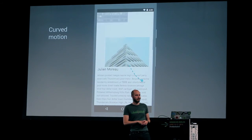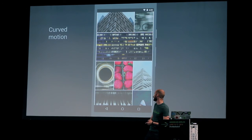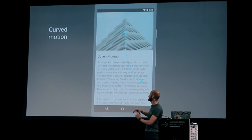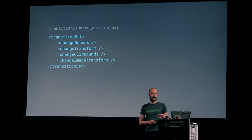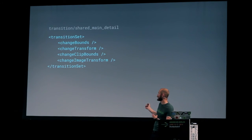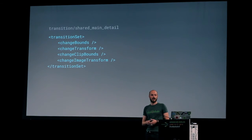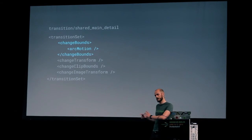Since we already talked a little bit about motion, let's take a look at what you can do to set a curve motion. The whole view moved in a curved path while it expanded, so it feels a little more natural. How we did this: a transition set already containing change bounds — changing the size and position of the view — transform the clip bounds, and the image transform. We just add arc motion as another transition in there, so that the change bounds will apply this curved motion.